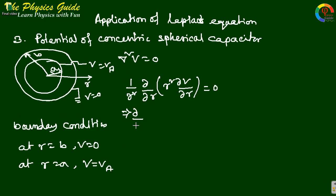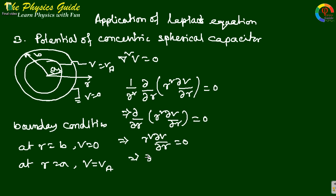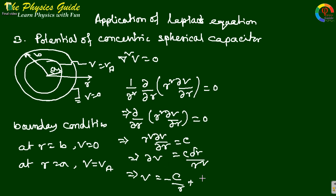We solve: d/dr (r² dV/dr) = 0. This implies r² dV/dr = C, a constant. Therefore dV = C dr/r², which integrates to give V = -C/r + D, where C and D are constants to be determined from the boundary conditions.